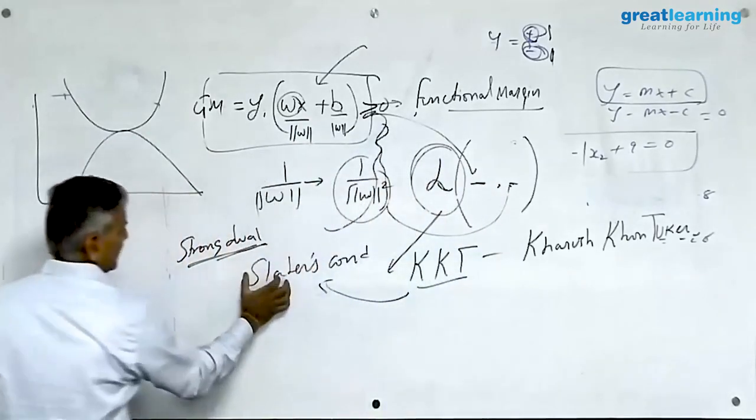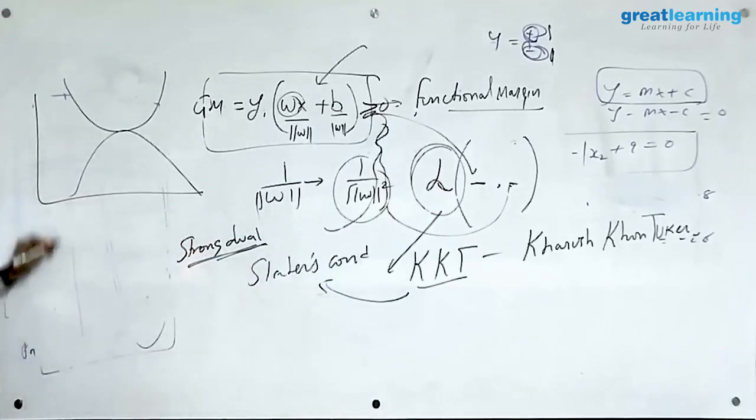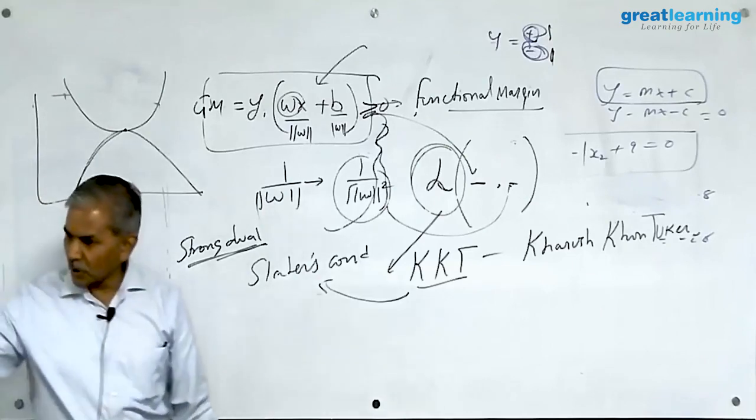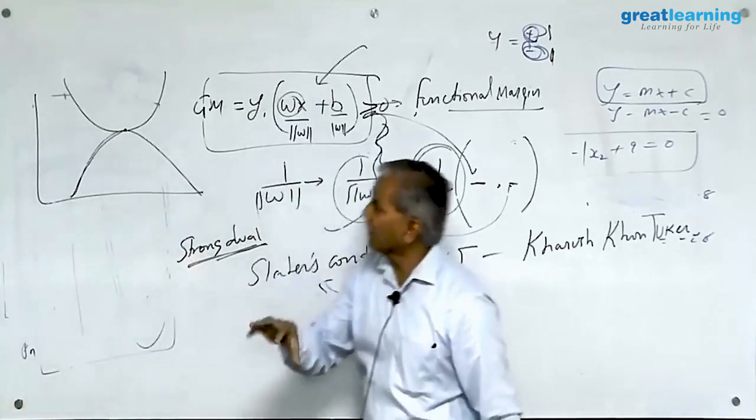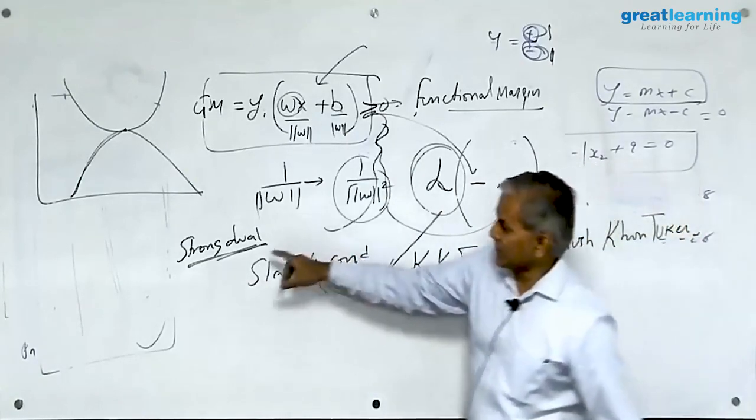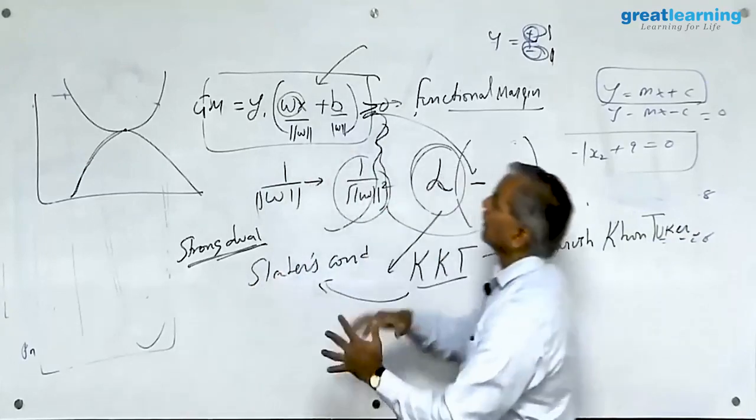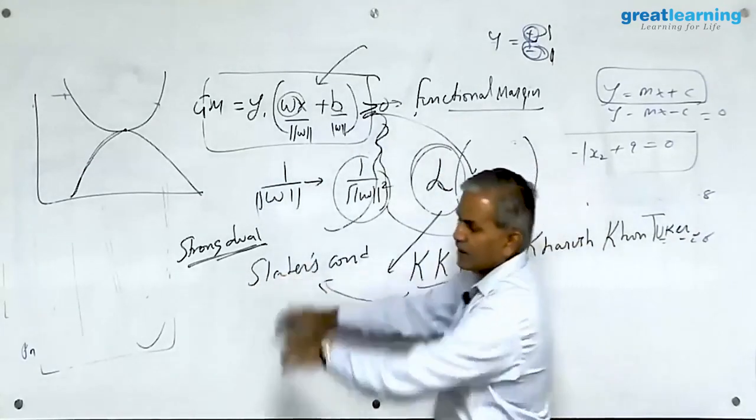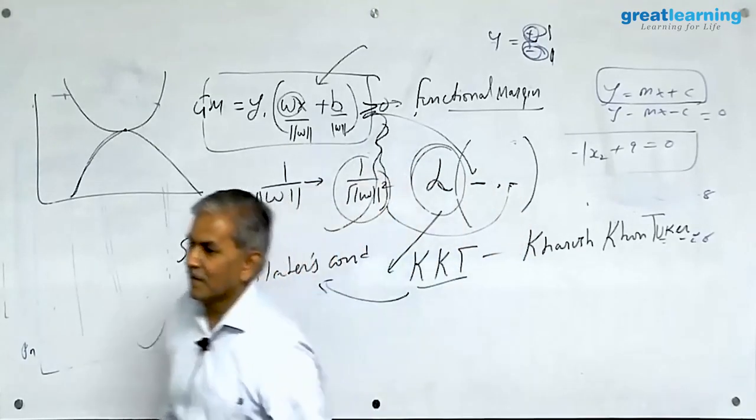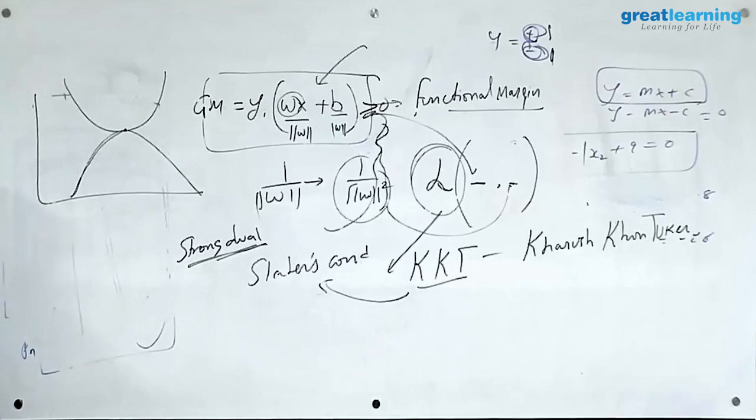What this Slater condition says is if it is a strong dual problem, you just minimize, instead of minimizing you just maximize one, you will find the solution for the other one also. You do not need to solve them separately. Just solve one equation, one constraint, the other one will automatically get taken care of. Using all this, it finds out for you the hyperplane which traverses right between the center of the two nearest points from the two different classes.